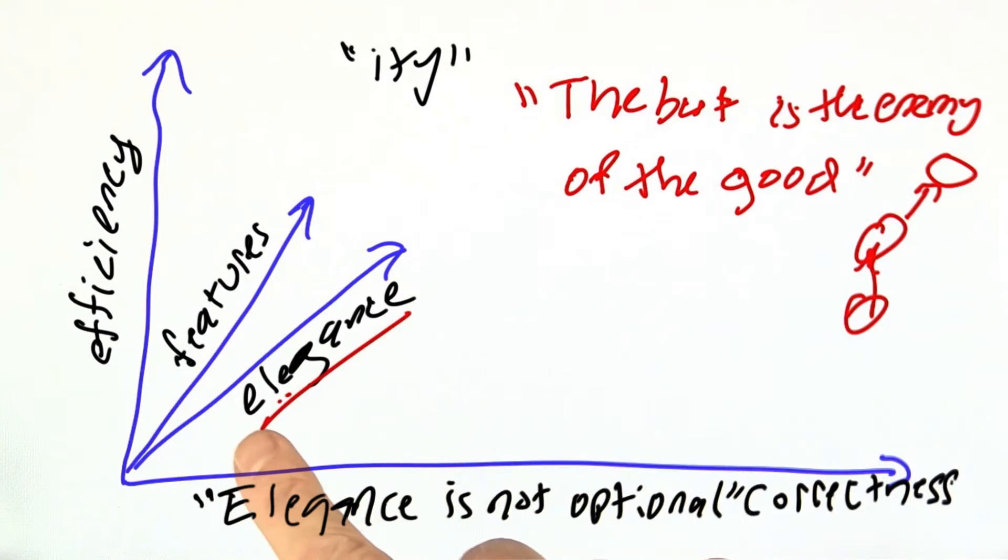For the moment, I want to get back to this idea of moving along the elegance direction without changing the other dimensions. That's often called refactoring.